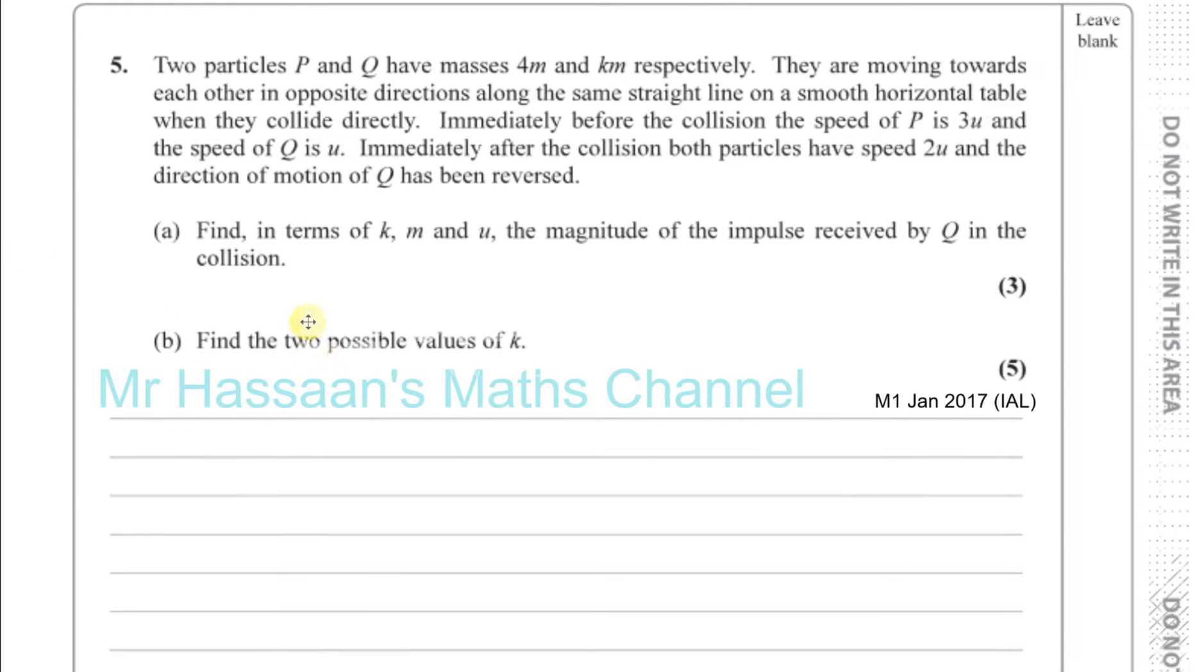They are moving towards each other in opposite directions along the same straight line on a smooth horizontal table. When they collide directly, immediately before the collision, the speed of P is 3U and the speed of Q is U. Immediately after the collision, both particles have speed 2U and the direction of motion of Q has been reversed.